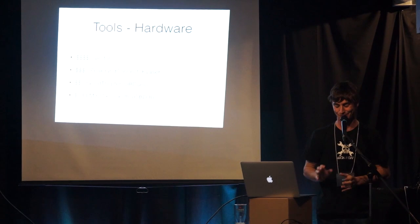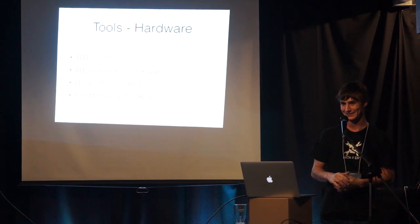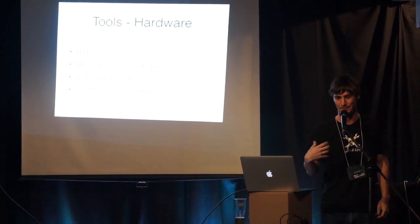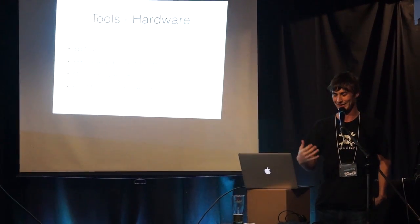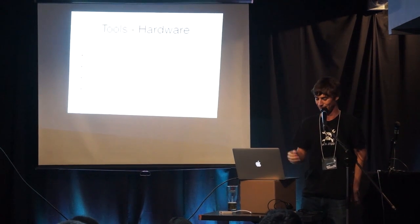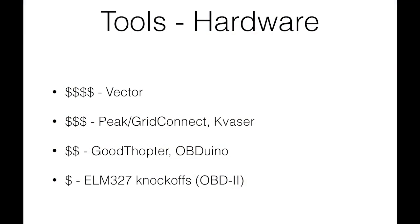Some people have done open source CAN tools, which is great, but the problem is you can't buy them. You'd have to build one yourself — download the Gerber files, get a board spun, and buy the parts. The Goodthropter, based on the Goodfet design by Travis Goodspeed, and the OBDuino are two of those. Then there are the cheap ELM327 knockoffs — if you just want to play with this, buy one off your favorite sketchy Chinese vendor and have fun.